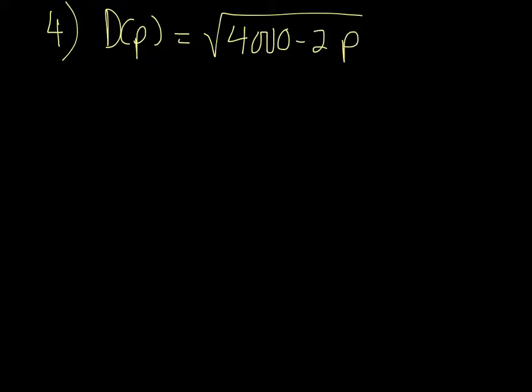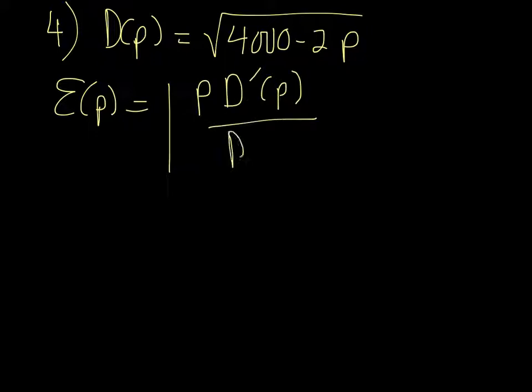Number 4. Given the demand function, D(p) is equal to the square root of 4,000 minus 2p. Find the elasticity of demand at a price of $47. So E(p) is equal to the absolute value of p times D'(p) over D(p).